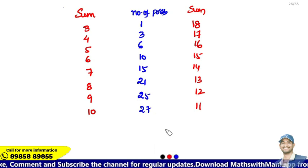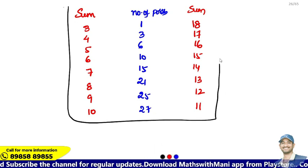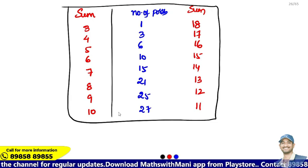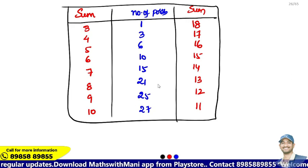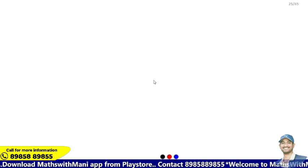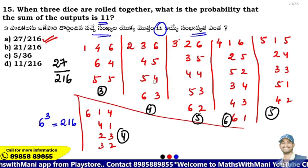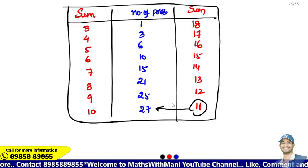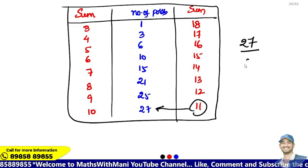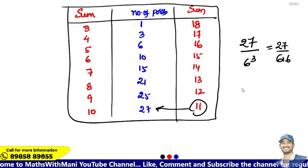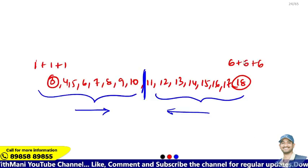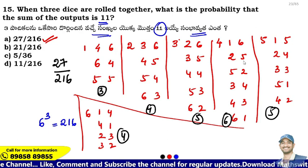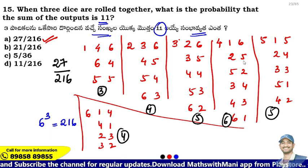In the exam, when you see 3 dice, recall this table. For the original question with sum = 11: look up 11 in the table — it gives 27 possibilities. So the answer is 27 by 216. Memorizing this table saves a lot of time compared to manual enumeration.